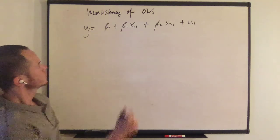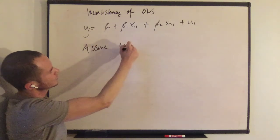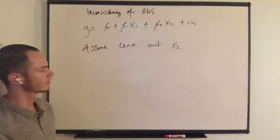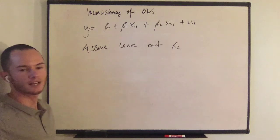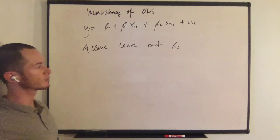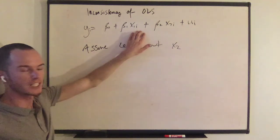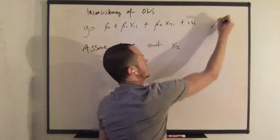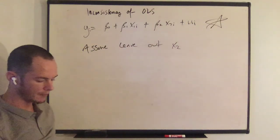Then assume you leave out x2 for who knows why. Maybe you wake up on the wrong side of the bed. You left out x2 from the regression that you estimate when the population model is given by this equation here. So what's going to happen?